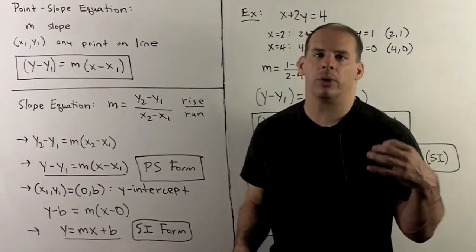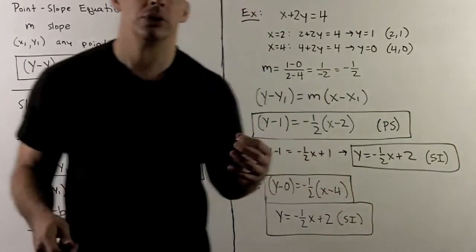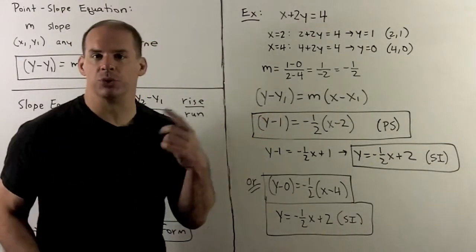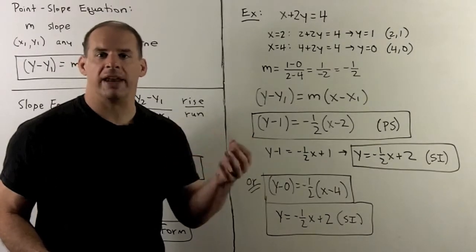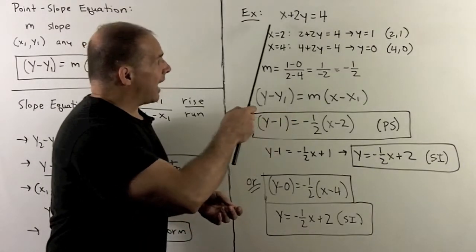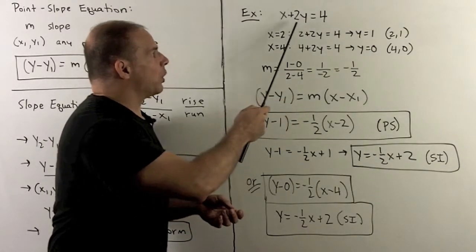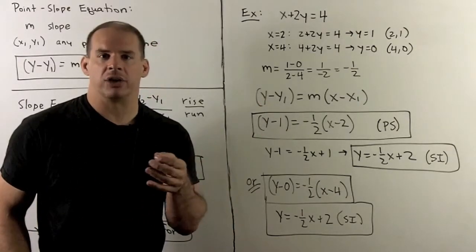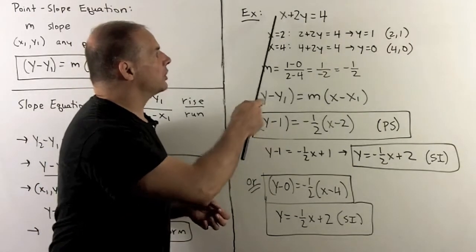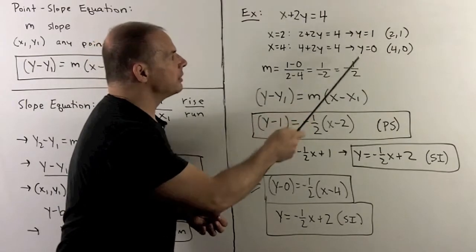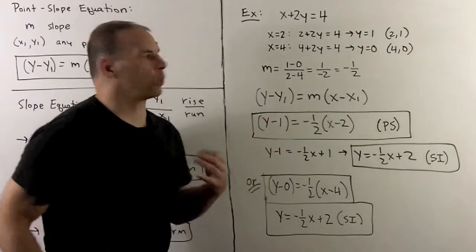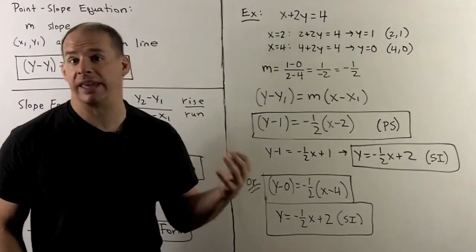Now let's run this through our problems from before. We'll see how to get our point-slope equation from two points from the standard form, and put that in slope-intercept form. We have this equation in standard form: x plus 2y is equal to 4. Rather than going for the intercepts, let's pick x equals 2 and x equals 4. When x equals 2, we get y equals 1, so we have the point (2, 1). When x equals 4, we get y equals 0, giving us (4, 0). Note that y equals 0 means we found the x-intercept.